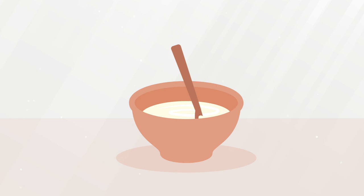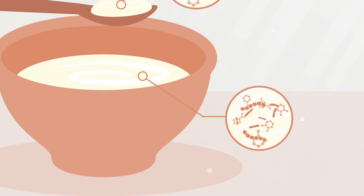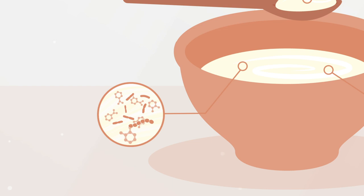For example, yogurt is a fermented food made from milk. During yogurt fermentation, lactic acid-producing bacteria grow on the sugars and other nutrients in milk. As they multiply, the bacteria produce compounds that change the flavor, texture, and nutrients in the milk to give us what we know as yogurt.